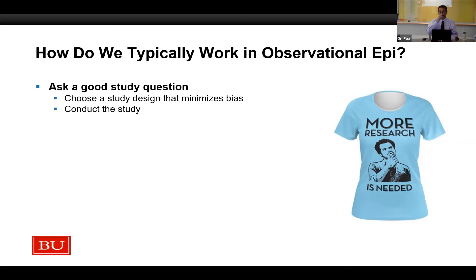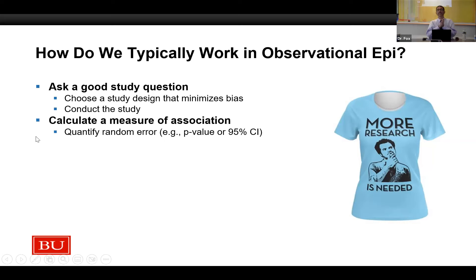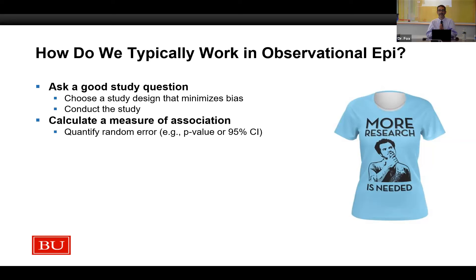Then we conduct our study. And when we're done, we calculate some measure of association — risk difference, relative risk, hazard ratio, whatever it is. Then we quantify the random error: a p-value, a confidence interval, maybe Bayesian methods. You would almost never publish a study with no confidence interval and no p-value whatsoever. There are exceptions — really large studies can often get away with it — but in general, you just wouldn't get away with submitting a study for publication with no quantification of the random error.